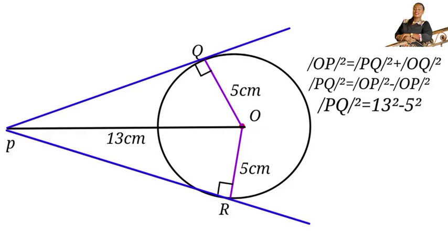So when we remove the squared, we have PQ equals the square root of 13 squared minus 5 squared. That will give us PQ equals the square root of 144. Finally, PQ equals 12 centimeters.